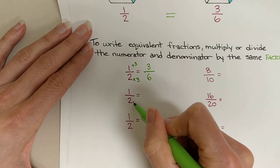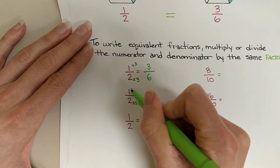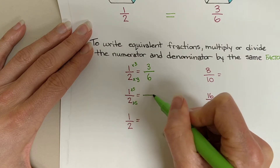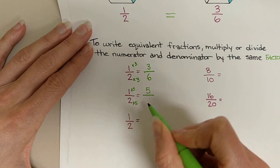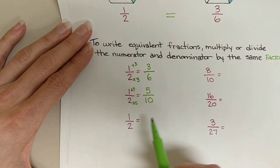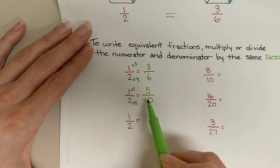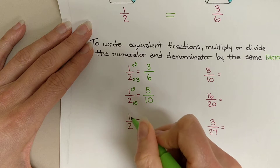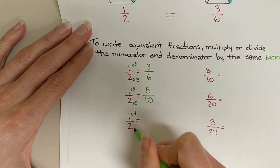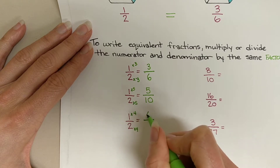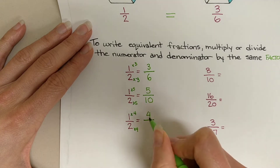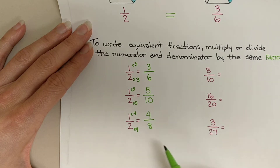We could also multiply by five: one times five gives me five, and two times five gives me ten. So we can say that one half is equivalent to five tenths. And for this one, let's multiply by four: one times four gives us four, and two times four gives us eight. So we can say that one half is equivalent to four eighths.